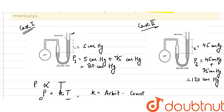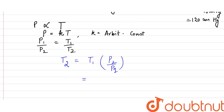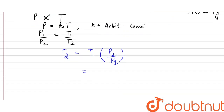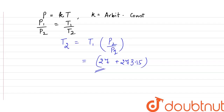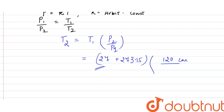In the first case, the temperature was room temperature, which was 27 degrees Celsius. The temperature in the second case, let's say this is T2. To calculate T2: T2 is equal to T1 into P2 divided by P1. T1 in absolute temperature is 27 degrees Celsius plus 273.15 to convert it into Kelvin. The pressure in the second case is 120 centimeters of mercury, and P1 is 80 centimeters of mercury.